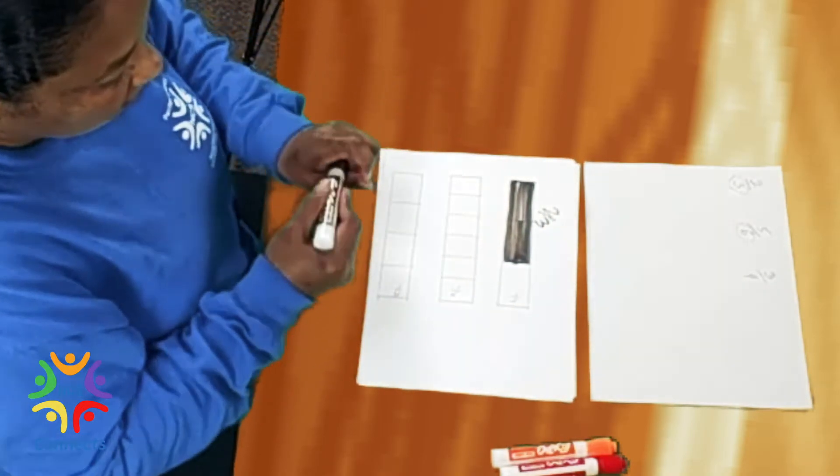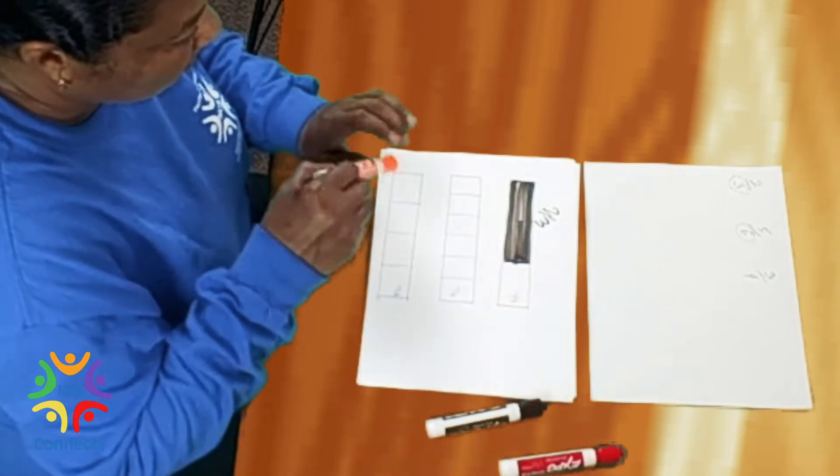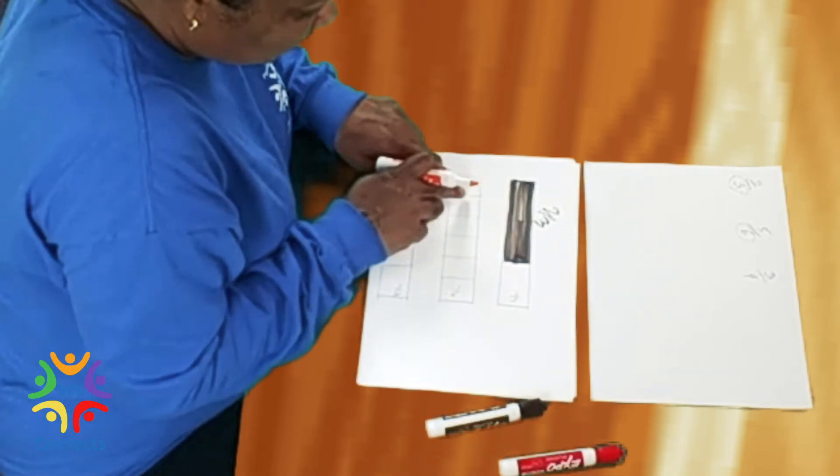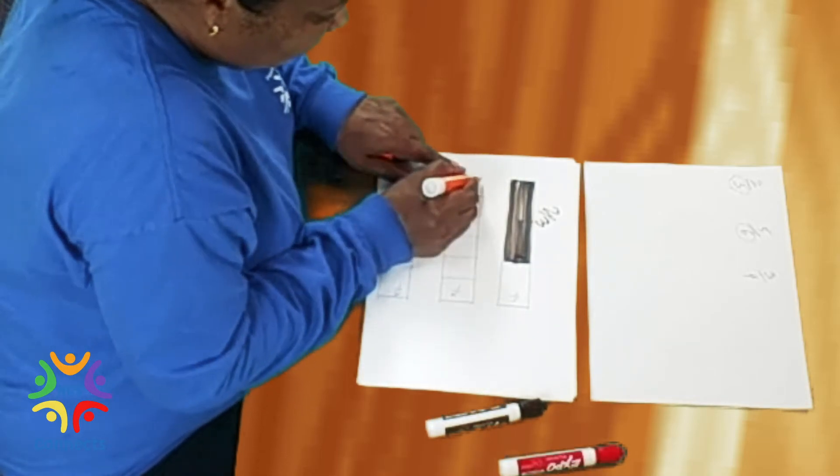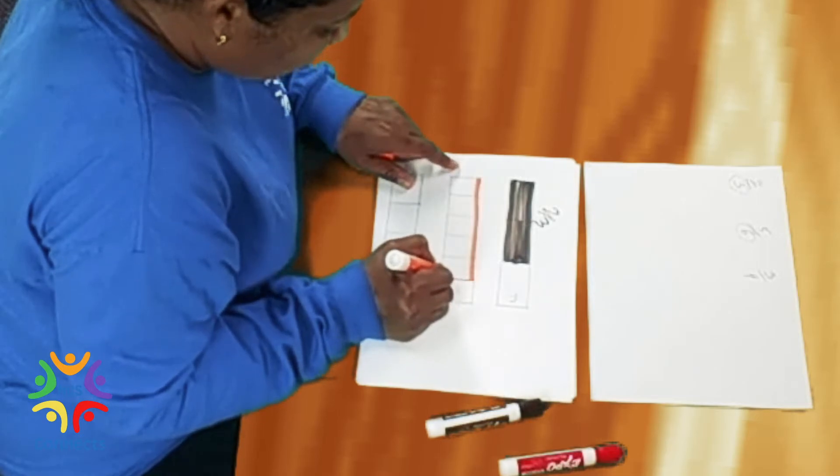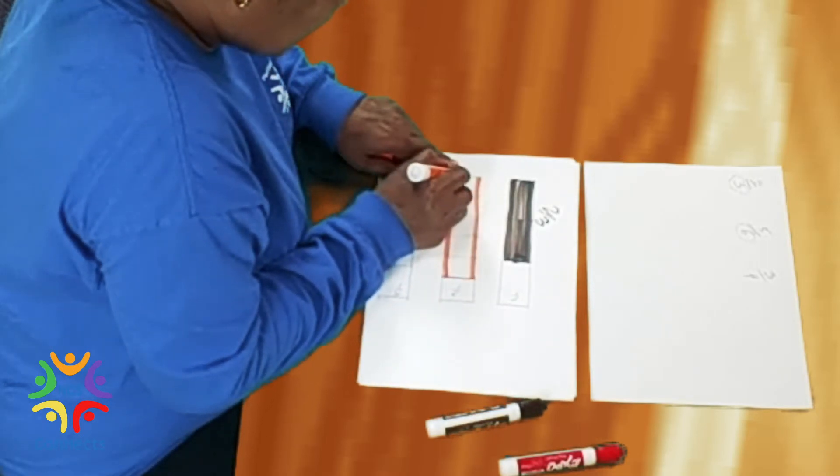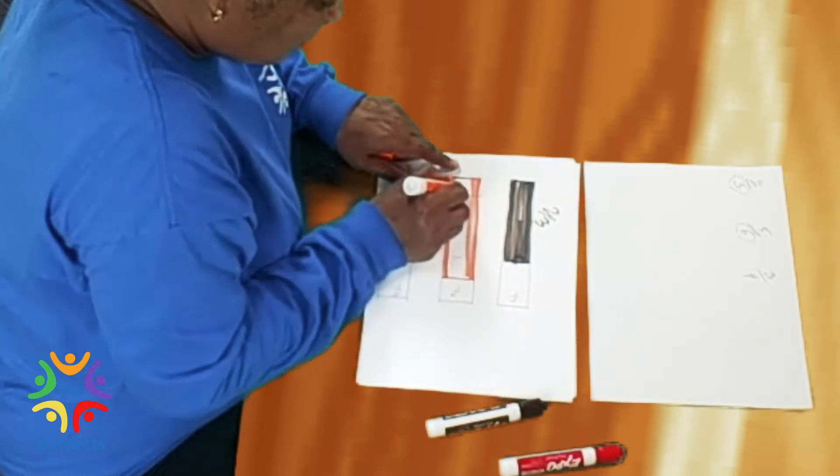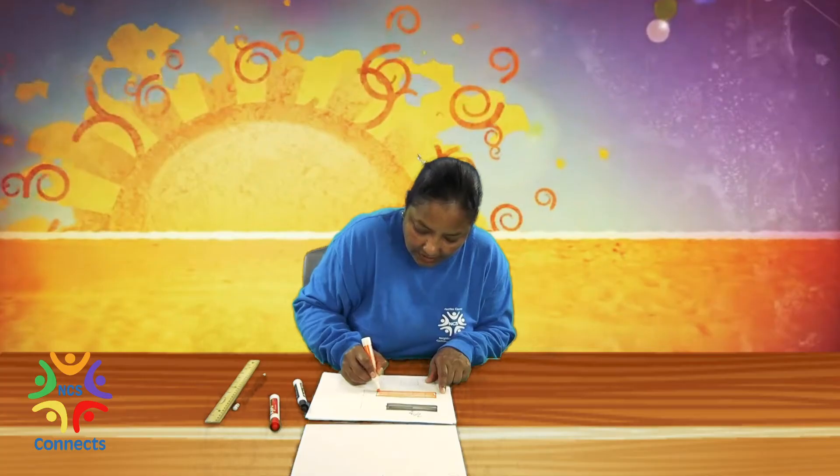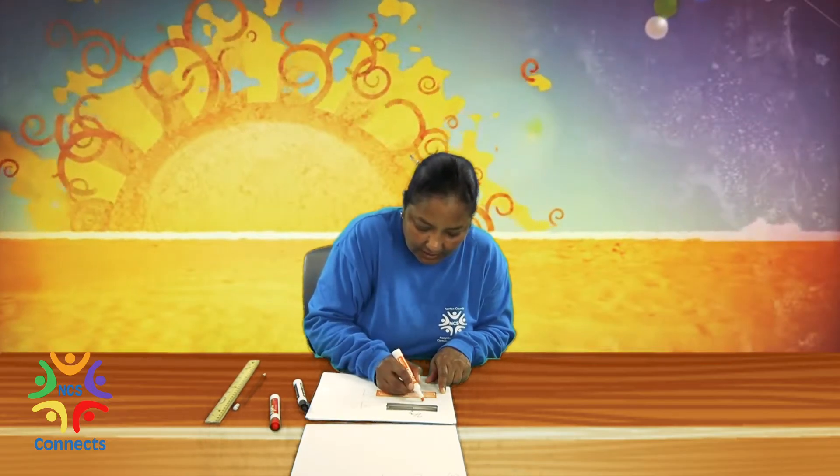And now I'm gonna go to the bottom and then do five-sixths. So that's one, two, three, four, five. Five squares out of six squares is five-sixths. And this is my five-sixths.